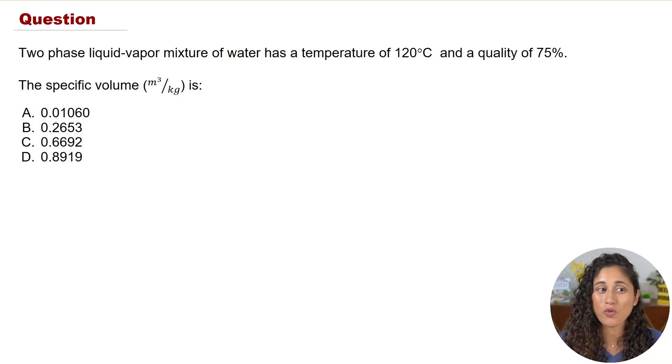Now let's go over the problem. We have a two-phase liquid vapor mixture of water that has a temperature of 120 degrees Celsius and a quality of 75%, and we want to determine the specific volume.